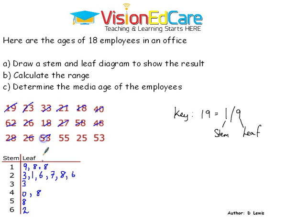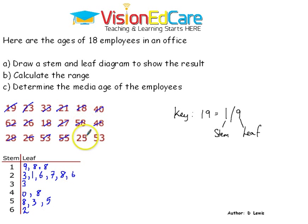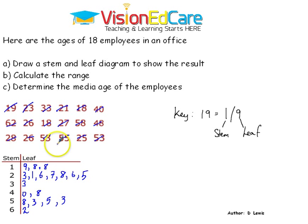We have 53, 55, 25, 53. So we have the stem and leaf diagram drawn here.